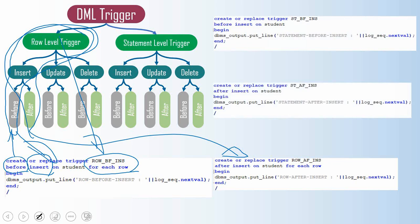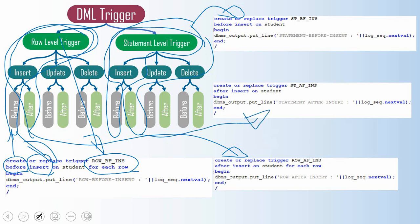Similarly, let us look at two more triggers. One is a before trigger at the statement level — a statement insert before trigger. The other is an after trigger at the statement level — a statement insert after trigger. Now here is the key question: suppose all four of these triggers are created on a single table and you are doing an insert operation. All insert-related triggers will get fired. We have four triggers: one row level before, one row level after, one statement level before, and one statement level after — all for insert.